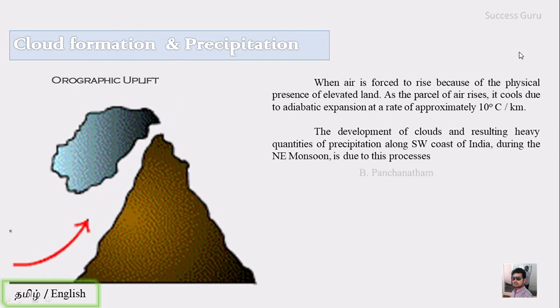First is orographic uplift, when air is forced to rise because of the physical presence of elevated land. If there is a hill or mountain present and the air mass has to cross that region, the air mass rises, leading to cooling due to adiabatic expansion. The rate of adiabatic expansion is 10 degrees Celsius per kilometer.